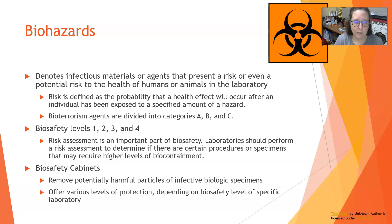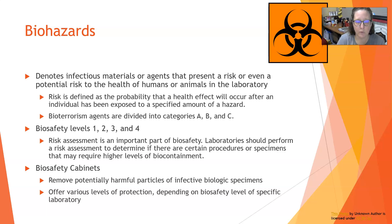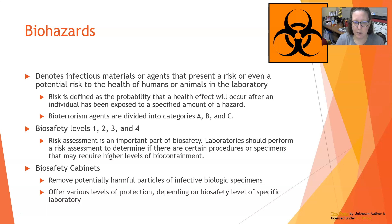That health effect could even be death. Bioterrorism agents can be divided into categories A, B, and C, but more specifically we're going to talk about biosafety levels — levels of containment: levels one, two, three, and four. Labs need to do a risk assessment to determine what level of biosafety they are and whether they need specific procedures or equipment to facilitate more biocontainment.